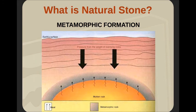Metamorphic formation occurs within the earth — it's heat and pressure over time. As the name implies, the material subjected to that heat and pressure metamorphosizes. We can come out with a different type of material than what it started as. So that could be a marble — it could have started as a limestone, or any sort of stone. With that application of heat and pressure, it changes or metamorphosizes.